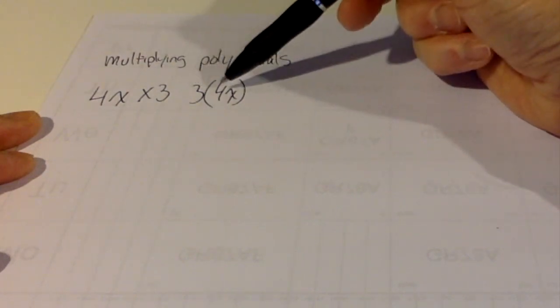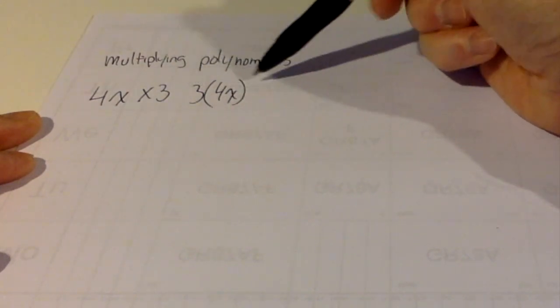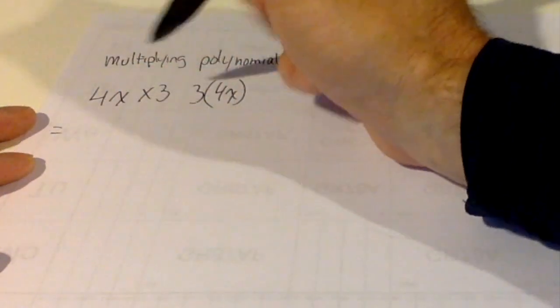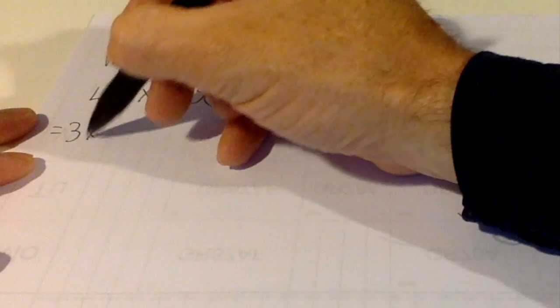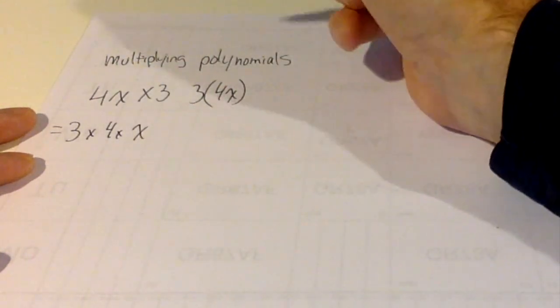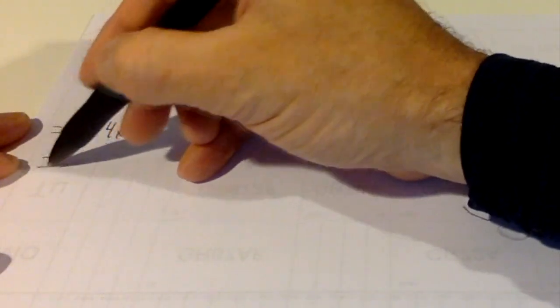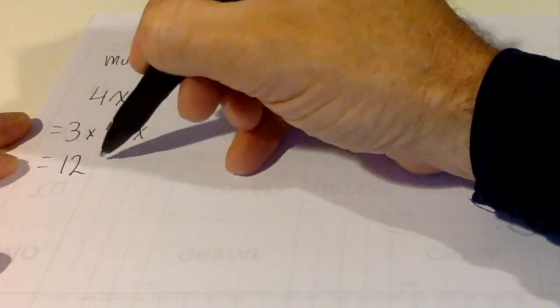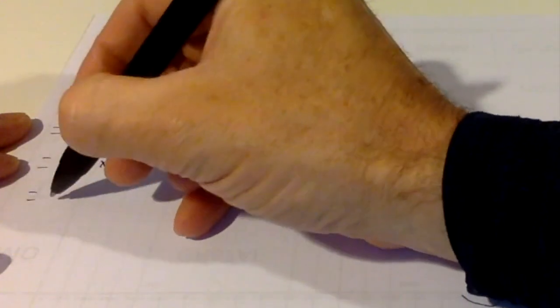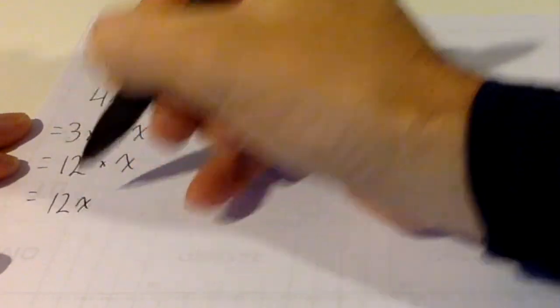You can figure out what 3 times 4 is, but we don't know what the x is. So let's write that out. We're going to do 3 times 4 times x. We know that 3 times 4 is 12 times x, so we just write it as 12x.